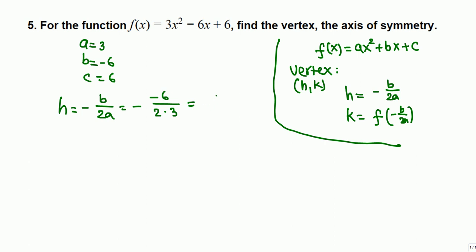6 over 6 is 1, so the x coordinate for the vertex is 1. Now k will be evaluate the function at 1. This is f of negative b over 2a; negative b over 2a is 1, so evaluate the function at 1.